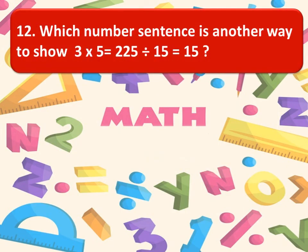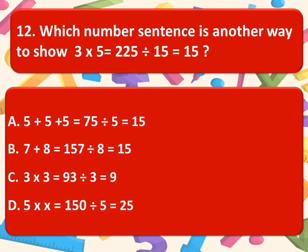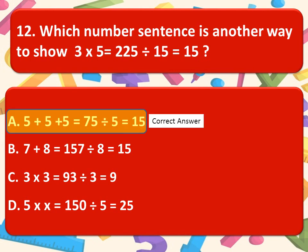Which number sentence is another way to show 3 into 5 is equal to 225 divided by 15 is equal to 15. Here are the options. Think about the correct option. You can pause the video to think about the correct option. And the correct option is option A. 5 plus 5 plus 5 is equal to 75 divided by 5 is equal to 15.